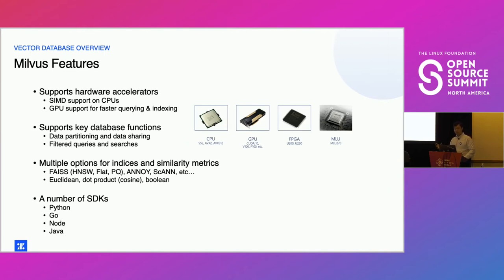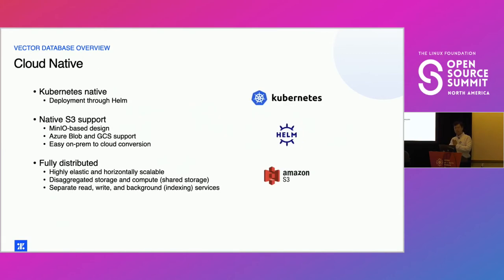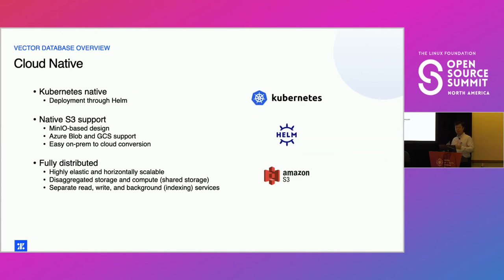We provide SDKs in Python, Go, Node, and Java, with a C++ one in progress. A big plus for Milvus as an open-source project is that we are entirely cloud-native and Kubernetes-native, with deployment through Helm. We have a native S3-based design — or S3-compatible storage — and for on-premises deployments we support MinIO, which allows easy on-prem-to-cloud conversion. We are fully distributed, meaning highly elastic and horizontally scalable.